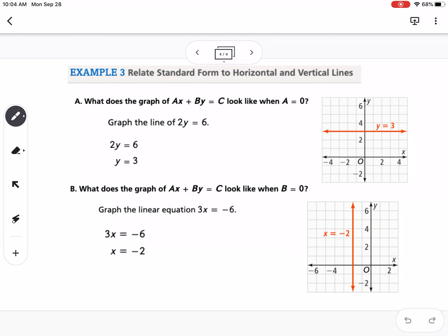Our last example is horizontal and vertical lines. Part A says, what does the graph of AX plus BY equals C look like when A is 0? We're going to graph the equation of the line 2Y equals 6. So we would divide both sides by 2. We end up with the equation Y equals 3. If it's just a Y, it's going to be a horizontal line. And we can see over here, this is the graph of Y equals 3. It's a horizontal line and it crosses the Y axis at 3.